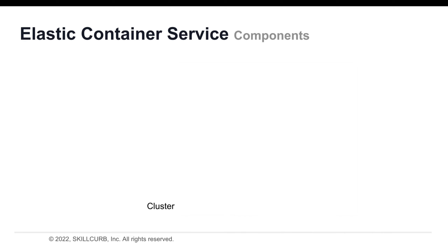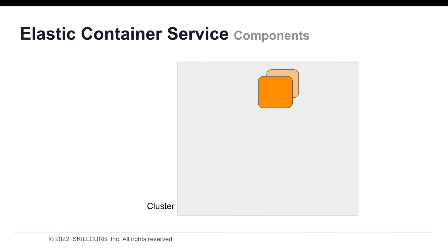Let's discuss the six components of ECS. The cluster: an Amazon ECS cluster is a logical grouping of tasks or services. Your tasks and services are run on infrastructure that is registered to a cluster. The infrastructure capacity can be provided by AWS Fargate. The container instance: an Amazon ECS container instance is an Amazon EC2 instance that is running the Amazon ECS container agent and has been registered into an Amazon ECS cluster.